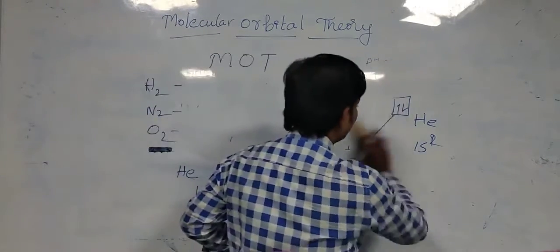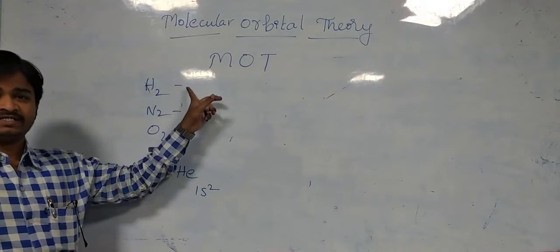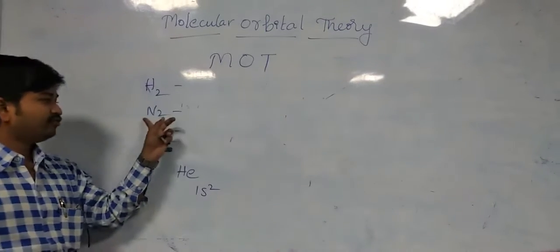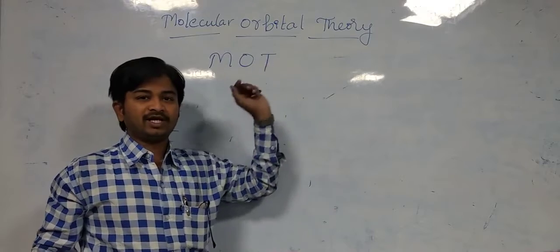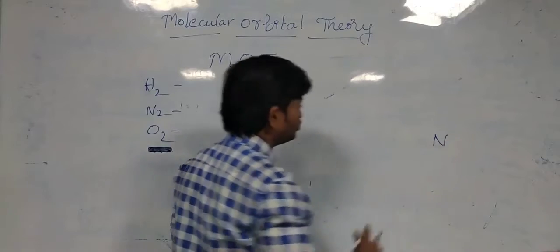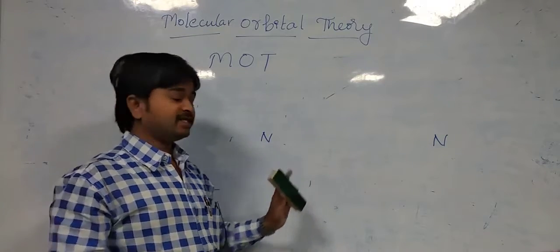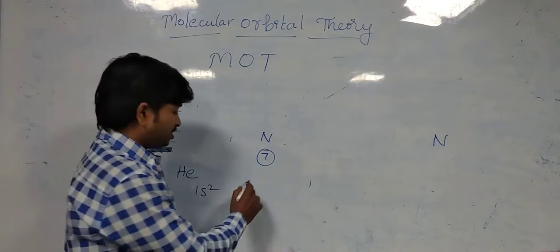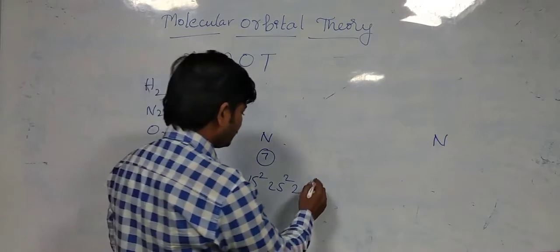Next, let us go to the N2 molecule. For N2, let us draw the molecular orbital theory diagrams. Before drawing the molecular orbital diagrams, we need to know the atomic number of the atom. Nitrogen's atomic number is 7. The electronic configuration is 1s2, 2s2, 2p3.